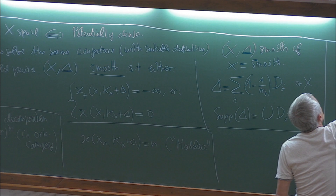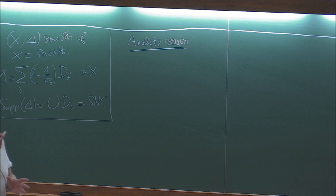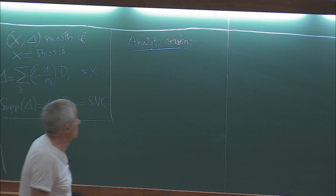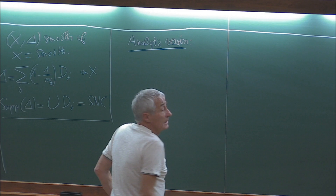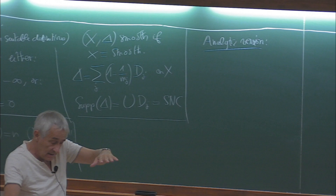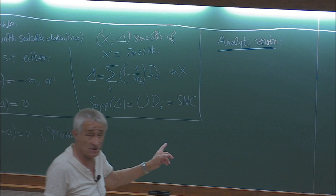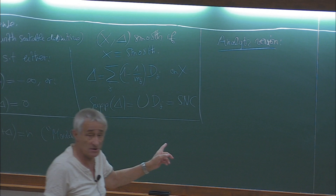For the analytic version, we want to know the meaning of having an entire curve inside (X, delta). I will not have time to explain why this definition is given, but essentially it comes from looking at the fibration: if you have a certain orbifold base, the curves you want to consider are those projected down from above, because you have these multiple fibers. This is a translation of that condition.